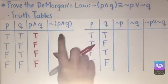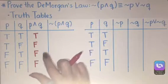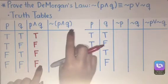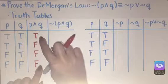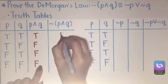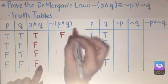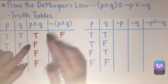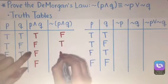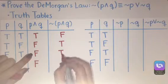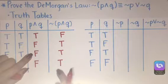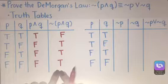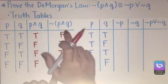Now the negation of these values would be the opposite. So the negation of (P and Q) when P and Q is true is false, and the negation of (P and Q) when P and Q is false is true — and that's the same all the way down the table. These are our values for the negation of (P and Q).